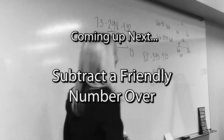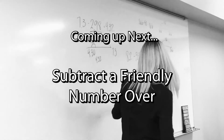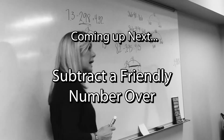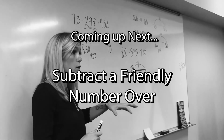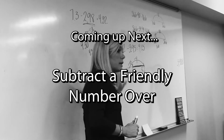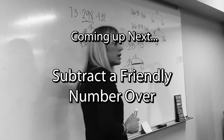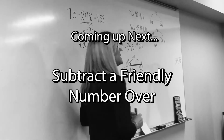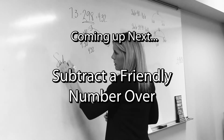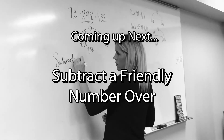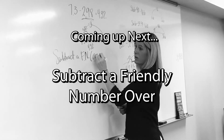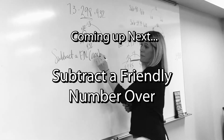So if you have to put a name to it, we typically call it 'subtract a friendly number over.' Kind of like on that workout — remember that one kid who added a friendly number over? I think it was adding 300 and then they backed up. Typically we call this one 'subtract a friendly number over and then adjust.'